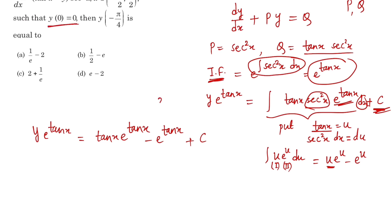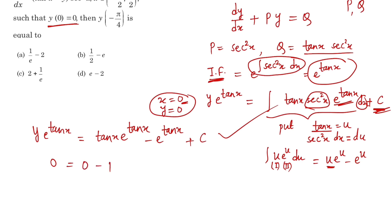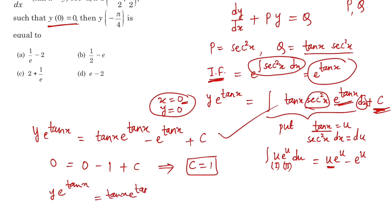We are given that y(0) = 0. Putting x = 0 and y = 0 into the solution: 0 = tan(0)·e^(tan 0) - e^(tan 0) + c. Since tan(0) = 0 and e^0 = 1, this gives 0 = 0 - 1 + c, so c = 1. The full solution is y·e^(tan x) = tan(x)·e^(tan x) - e^(tan x) + 1.